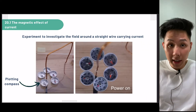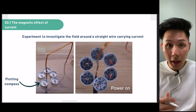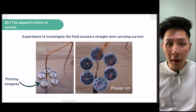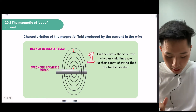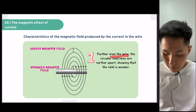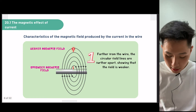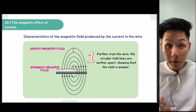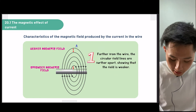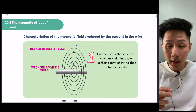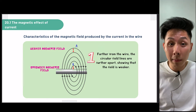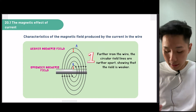Here are some experiments. To investigate the direction, you can put plotting compasses around a wire, and you will see that they all line up in a way that shows you the direction of the magnetic field generated. Some characteristics of the magnetic field: the first one is that further from the wire, the circular field lines are further apart, and this shows that the field is weaker. You can see that the field lines in part A are further apart, meaning the magnetic field there is weaker compared to part B, which will have a stronger magnetic field.